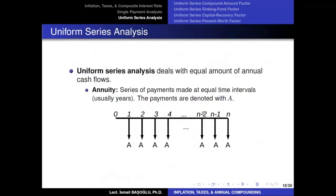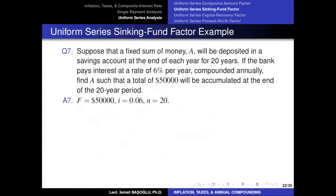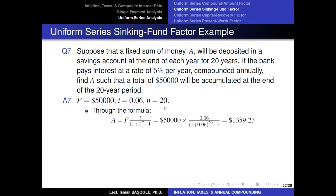Drawing the cash flow diagram, F is given as $50,000 and the number of investment years is 20. For 20 years, we deposit money at the end of each year, and the question asks what the annual installment size should be to collect that $50,000. We determine the future value: the aimed future value is $50,000, the interest rate is 0.06, and the number of investment years is 20.